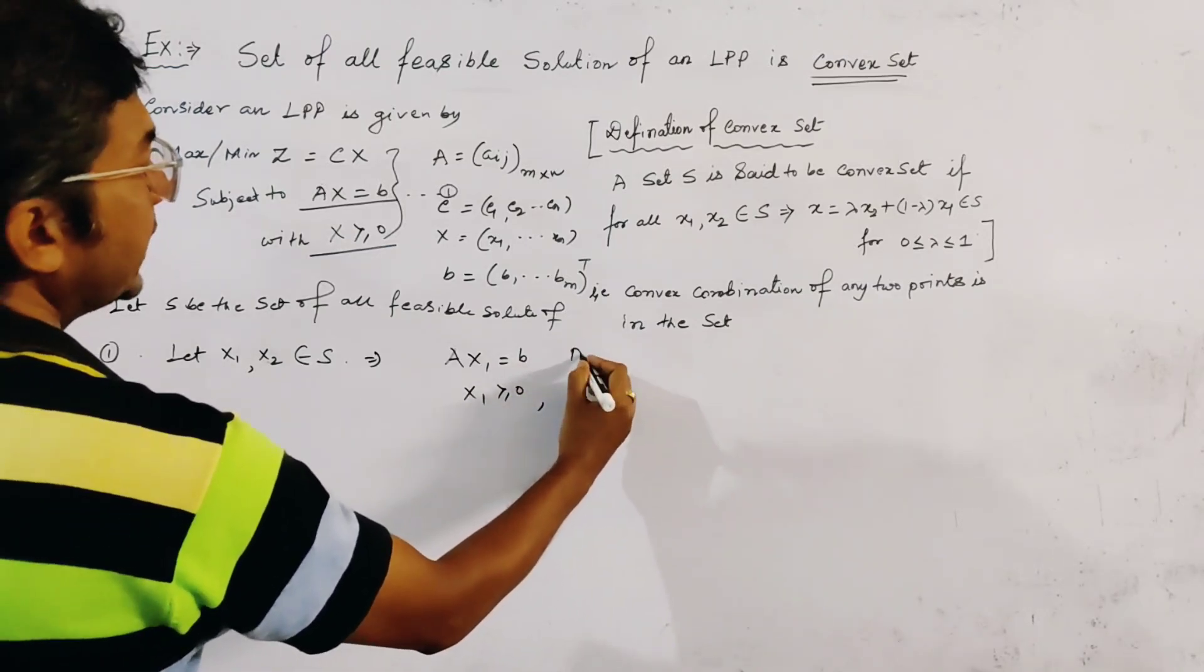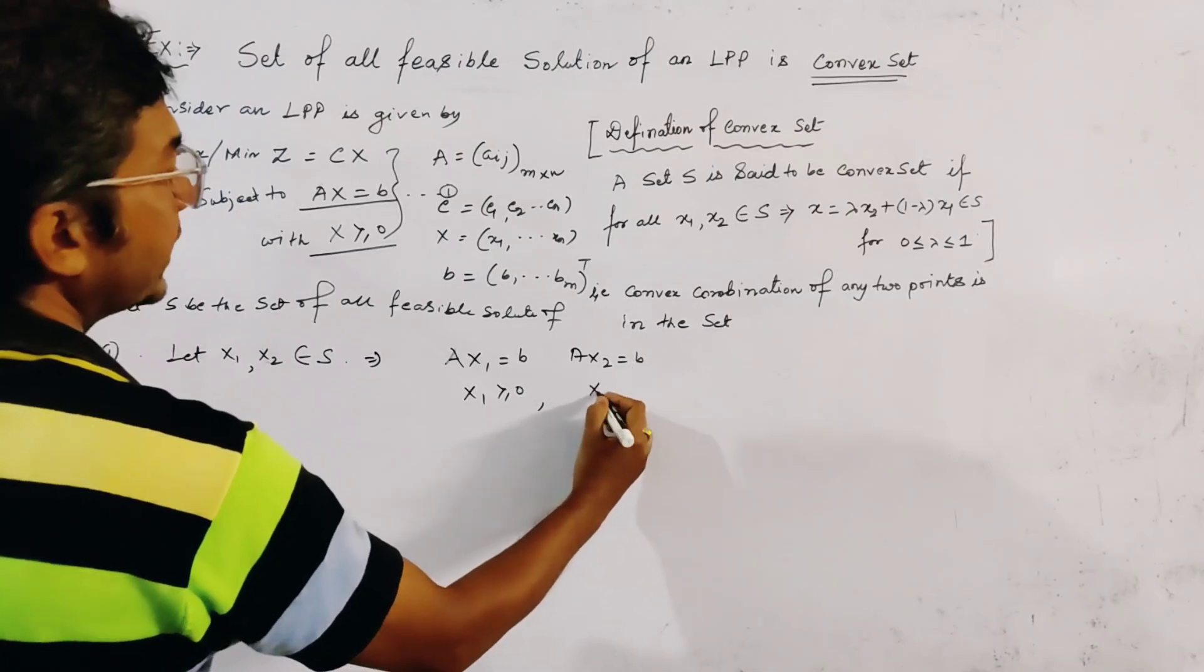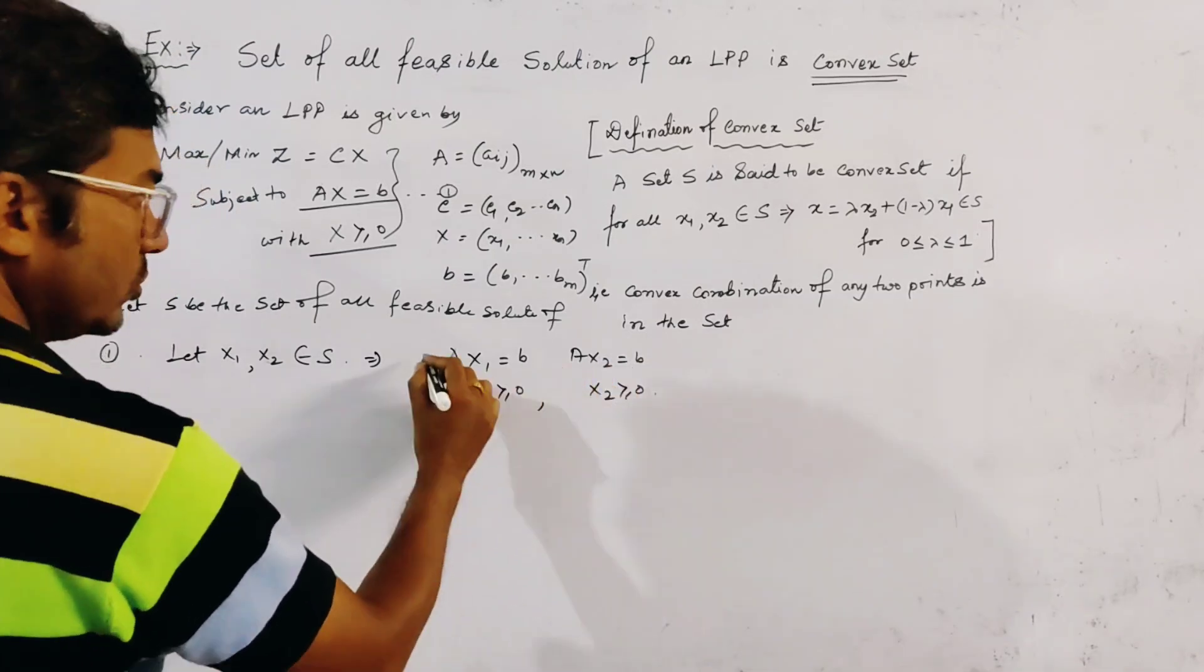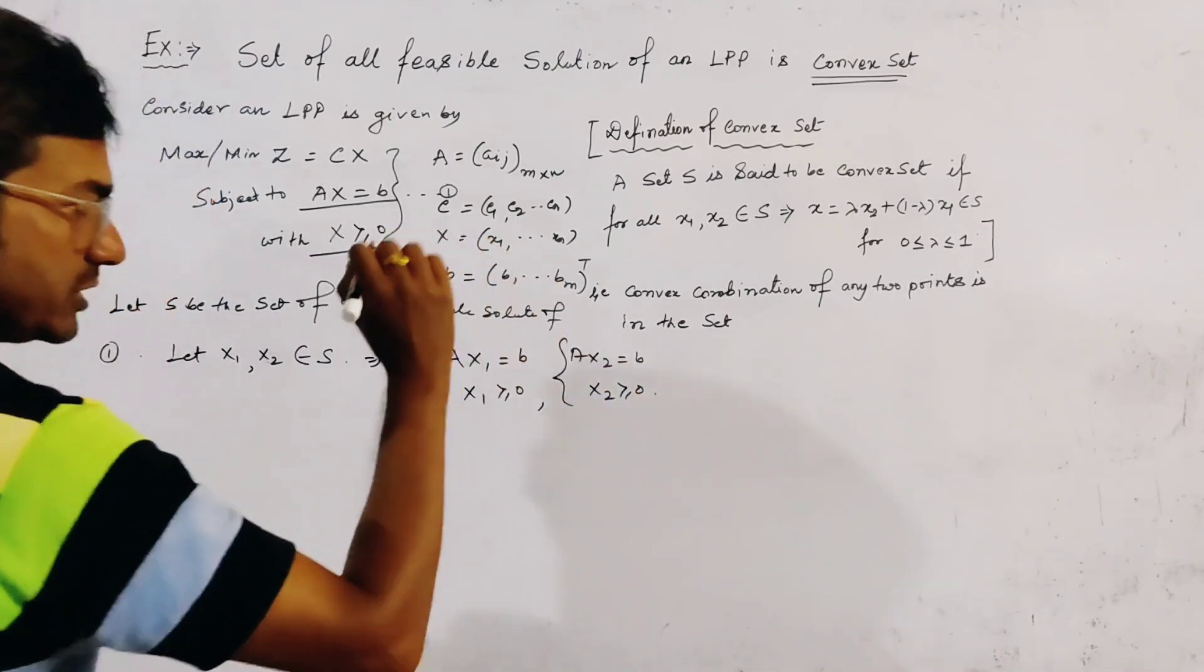And similarly, A, X2, equal to B, and X2, greater or equal to 0. These two conditions must be satisfied. Since X1, X2, greater or equal to S.